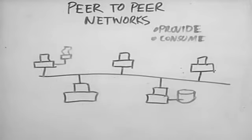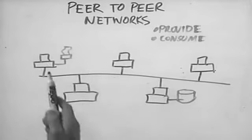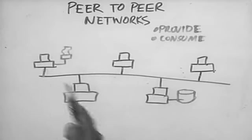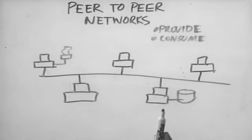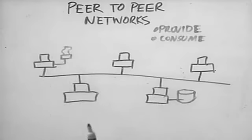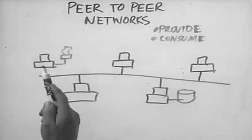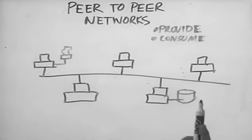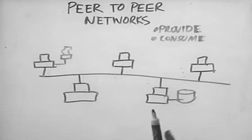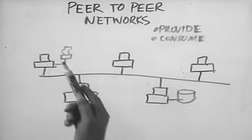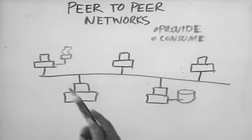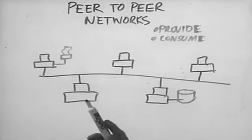This one provides printing, this one provides storage. At the same time, these hosts also consume services. For instance, this host prints to this workstation, and this workstation saves files to the hard drive in this workstation. In essence, they function both as a client and as a server at the same time.